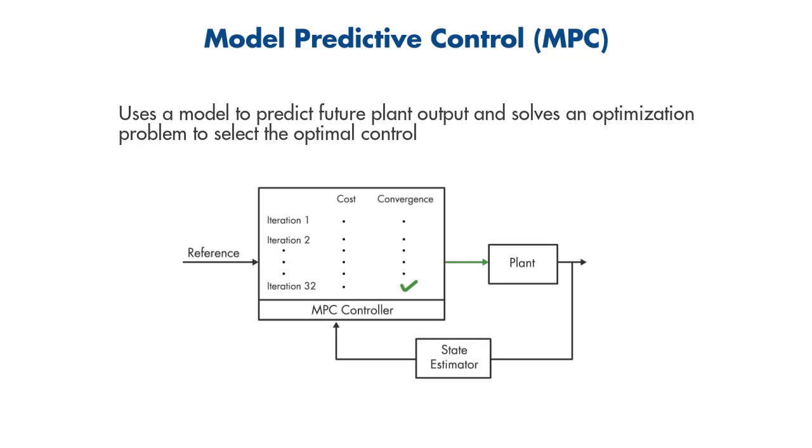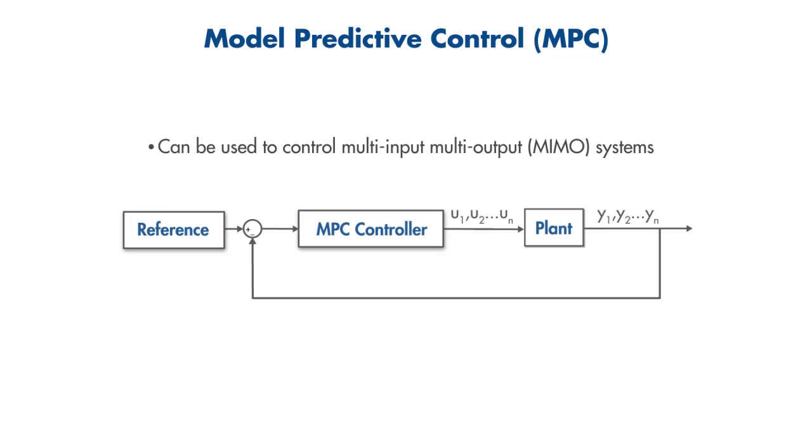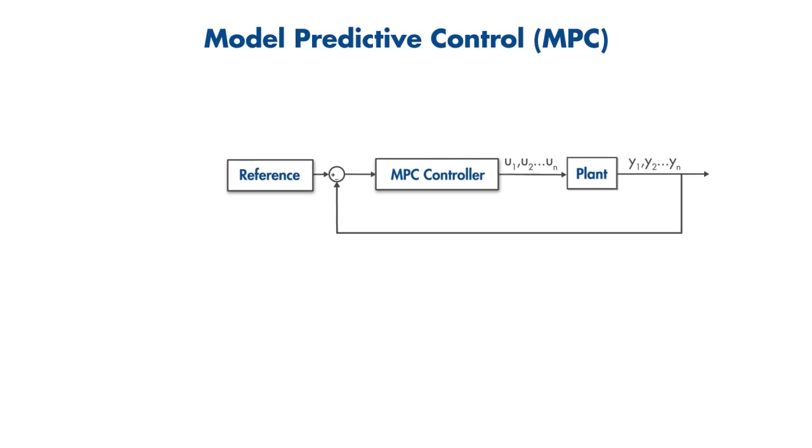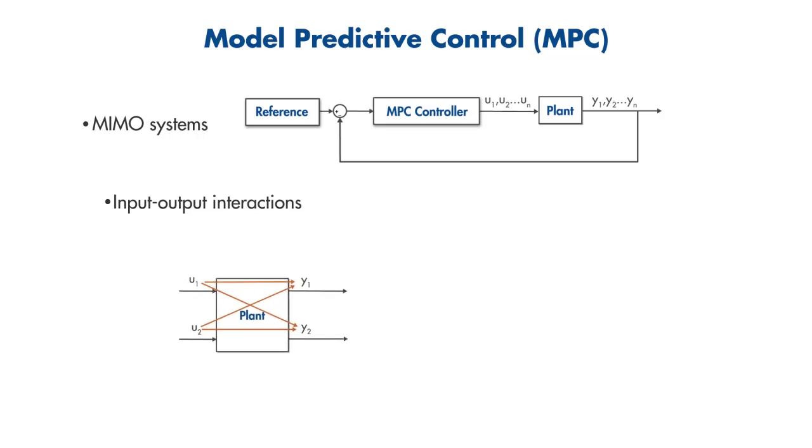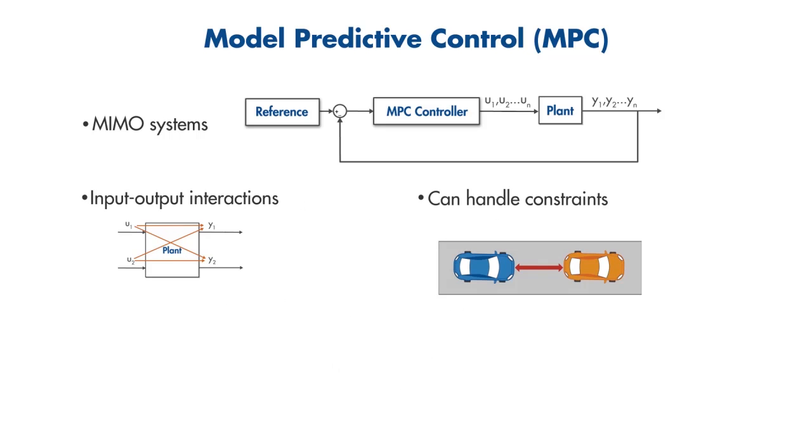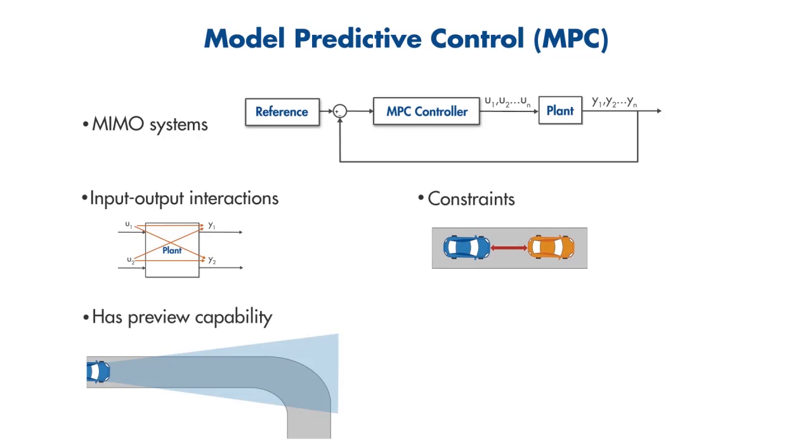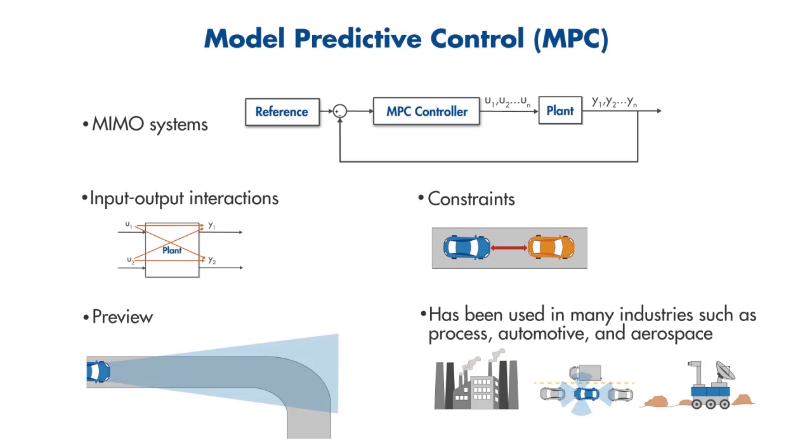In summary, MPC utilizes the model of a system to predict its future behavior, and it solves an online optimization problem to select the best control action that drives the predicted output to the reference. It can control multi-input, multi-output systems that might have interactions between inputs and outputs. MPC can handle constraints, and it has preview capability. It is also widely used in many industries.